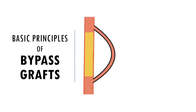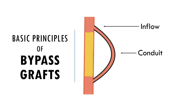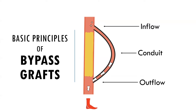There are three basic elements to a successful bypass graft. One: unobstructed inflow, which is where the bypass graft is receiving blood from. Two: a good quality conduit, which is the actual graft being used to bypass the blockage or area of disease. And three: adequate outflow to the target artery receiving blood through the conduit. The inflow artery should be free of any hemodynamically significant disease, and outflow should be enough to maintain sufficient flow rates through the conduit and resolve the clinical syndrome of ischemia.